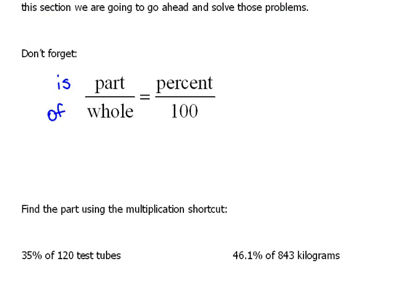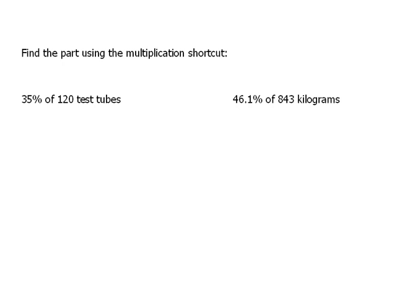So let's get started and see what we can do here. However, this one says, find the part using the multiplication shortcut. We're just going to be talking about it as the proportion method. It really is just using the proportion method.